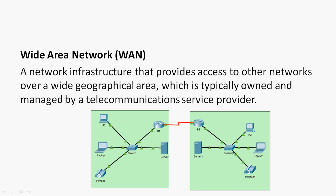Next is WAN, that is wide area network. A network infrastructure that provides access to other networks over a wide geographical area, which is typically owned and managed by a telecommunication service provider, is called a WAN.